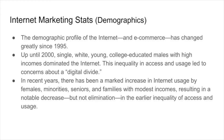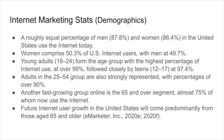Looking at demographics, the demographic profile of the internet and e-commerce has changed greatly since 1995 when all this really started. Up until 2000, single, white, young, college-educated males with high income dominated the internet — the upwardly mobile. People with less education weren't on the internet, and we called it a digital divide: the haves and have-nots, very clearly defined. But in recent years, there's been a marked increase in internet usage by females, minorities, seniors, and families with modest income, so that digital divide has more or less been erased to some degree, making the internet more ubiquitous than ever.